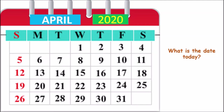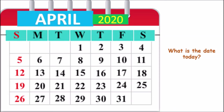So let us start calendar reading. What is the date today? First you have to open the correct page. The month is April, so you need to open the April page. Yes, this is the April page. And today is 2. Look carefully — what is written on top of 2? T. This T tells us that today is Thursday. So today is 2, and today is Thursday.